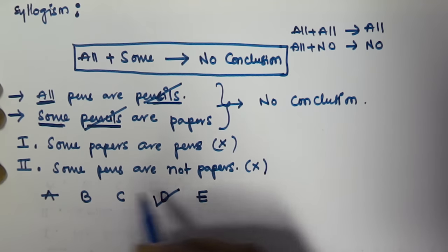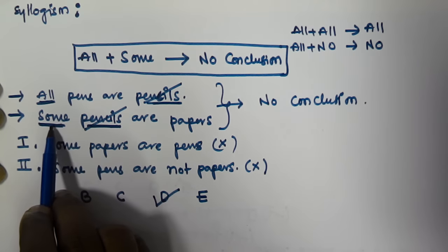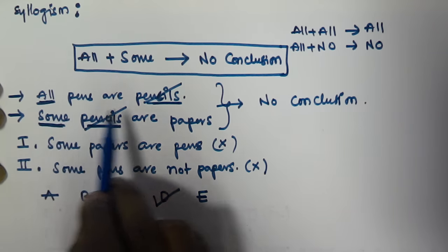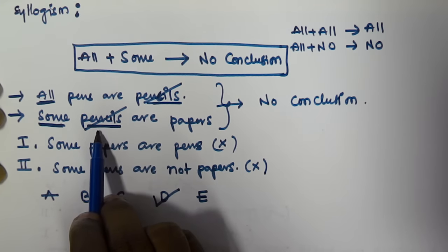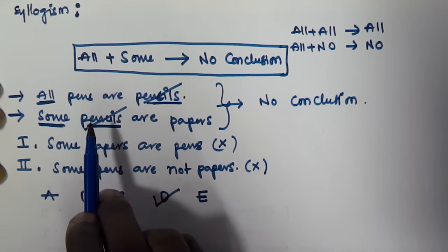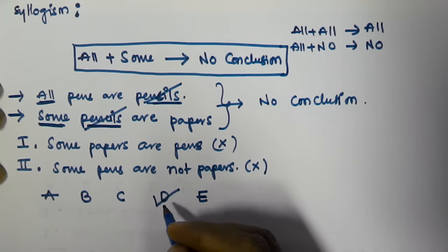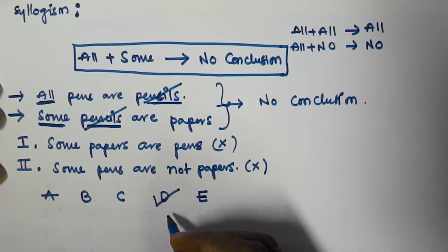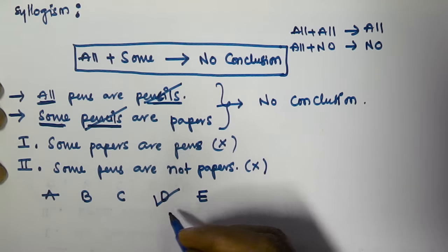So whenever the first syllogism starts with 'all' and the second starts with 'some,' and the predicate of the first syllogism equals the subject of the second, directly select option D — neither statement one nor statement two is true. I hope you understood this. Thank you very much for watching this video, and please subscribe to my channel.